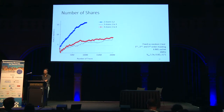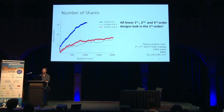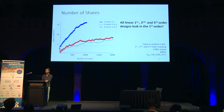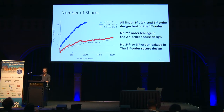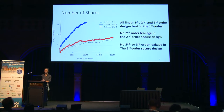As for the number of shares, not surprisingly, the lower the number of shares, the higher the leakage. What is surprising is that we see first-order leakage in all these implementations. The two-share implementation leaks fastest in the first-order test, but later we also see leakage in the second- and third-order implementations. Notably, there was no second-order leakage in the second-order secure implementation, and no third-order leakage in the third-order secure implementation.